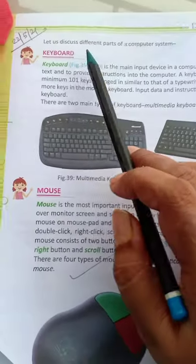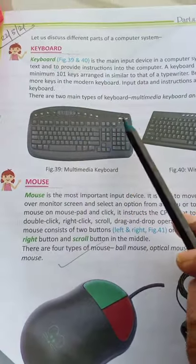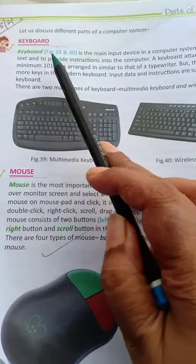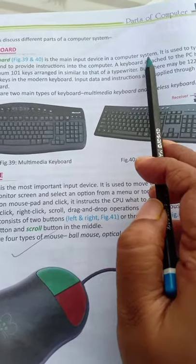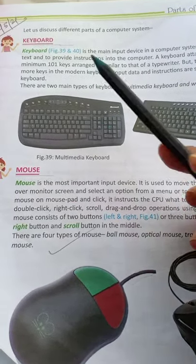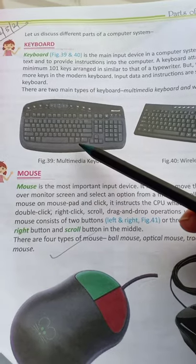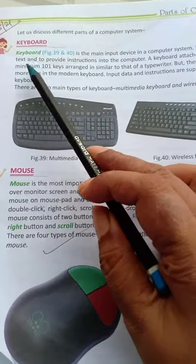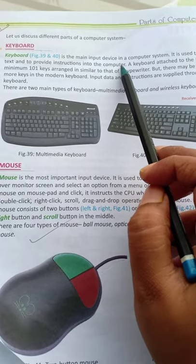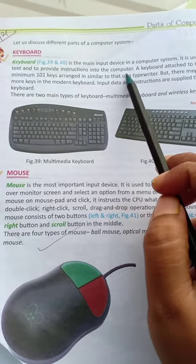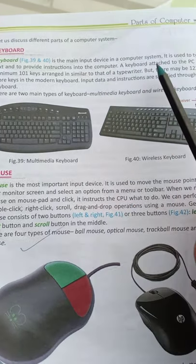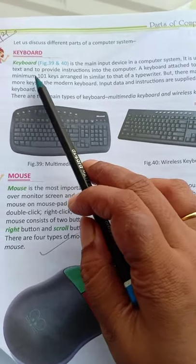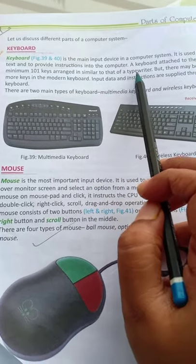First we are going to discuss the keyboard. Keyboard is the main input device in our computer system. The most important things are the keyboard and mouse. It is used to type text and to provide instructions into the computer. A keyboard attached to a PC (personal computer) has a minimum of 101 keys, arranged similar to that of a typewriter.